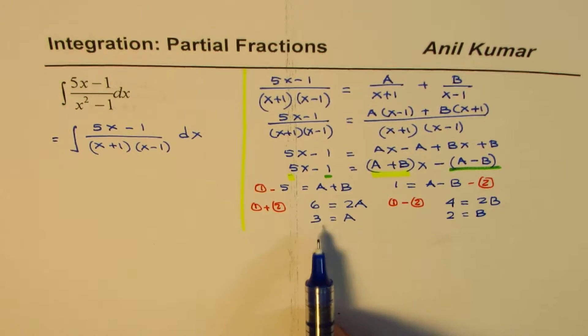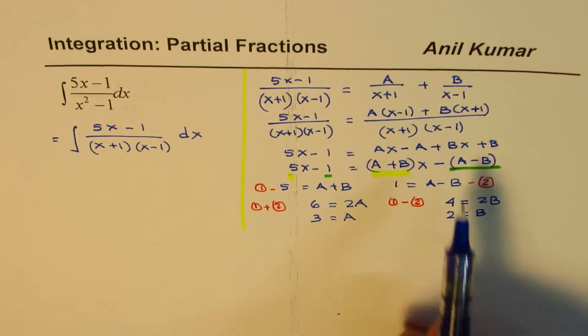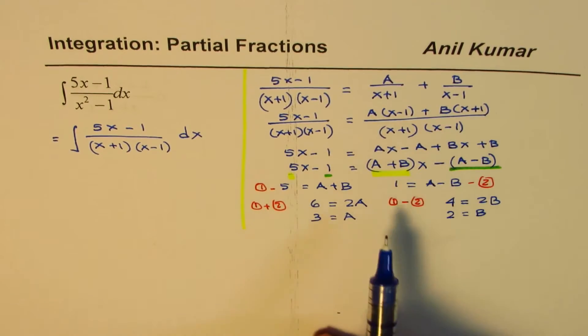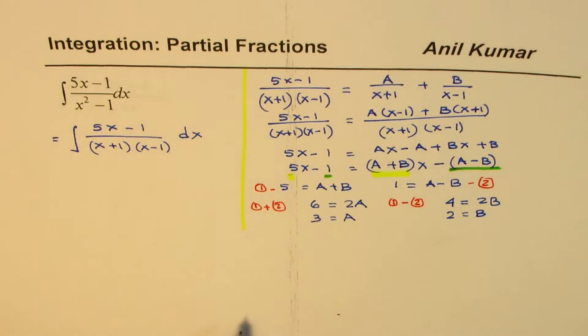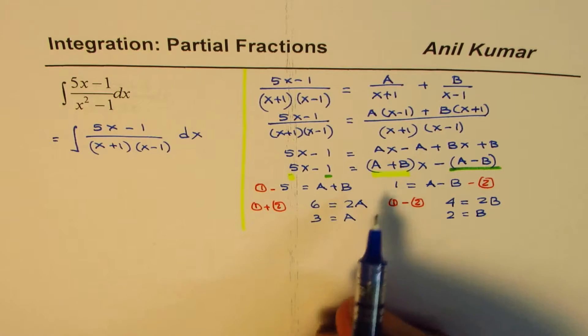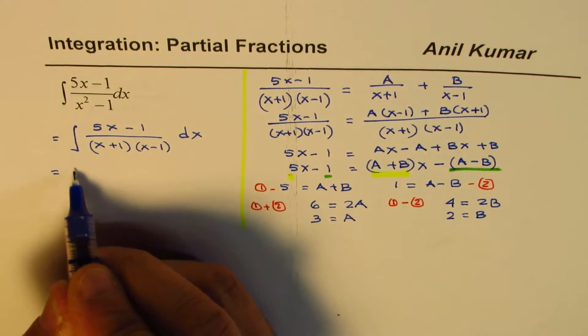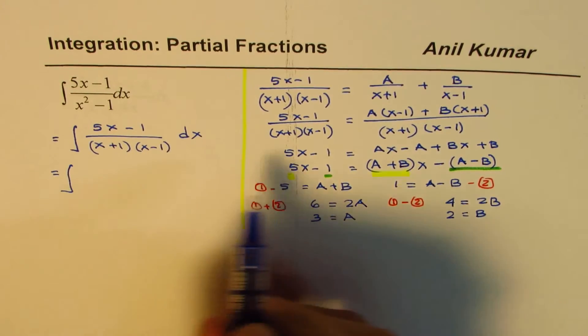Since I have A as 3, and B as 2, I could write this rational function in that form, and this process is called partial fractions. So I'm replacing now my integral by this function.